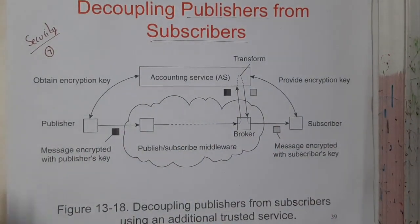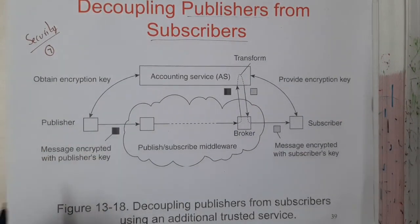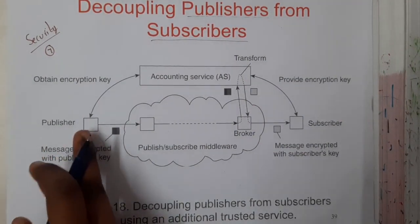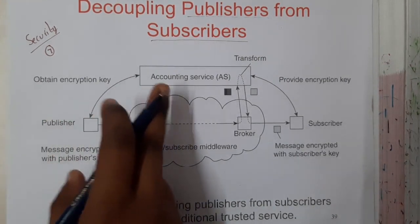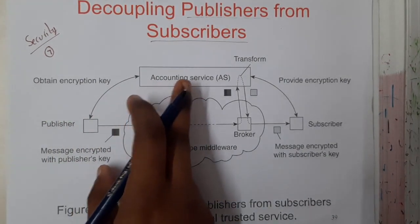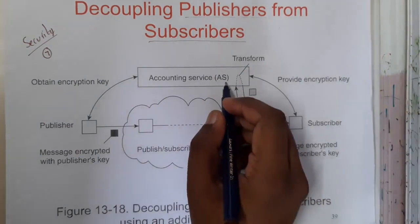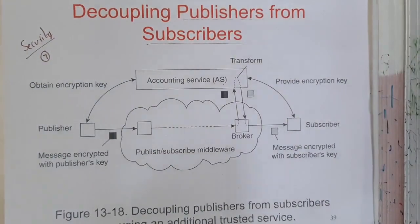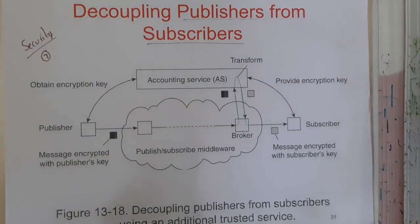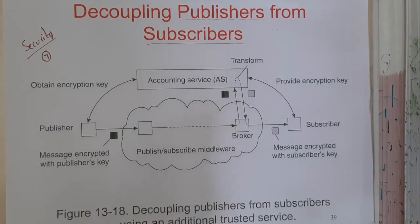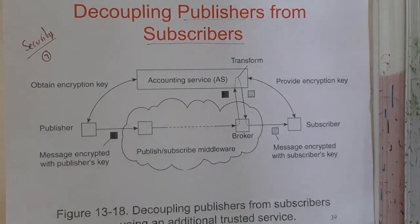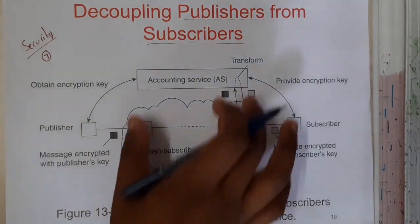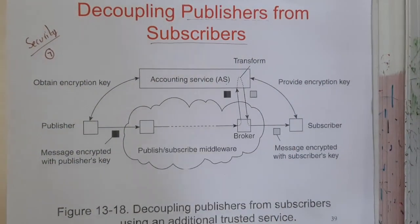Whenever a publisher publishes something, it will be passed through the object encryption key and pushed into the accounting services. Basically, the encryption and related processes will be taking place here, because any kind of data should not be corrupted, should not be affected by a virus, and should not have any kind of malicious content.